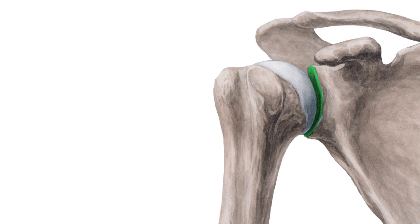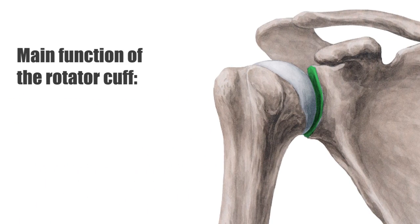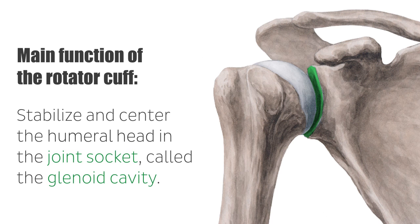The main function of the rotator cuff is to stabilize and center the humeral head in the joint socket, called the glenoid cavity. In addition, the muscles tighten the joint capsule, preventing a pinch during shoulder movements. The rotator cuff, as the name suggests, plays a major role in the internal and external rotation of the upper arm in the shoulder joint.